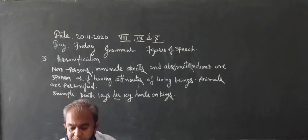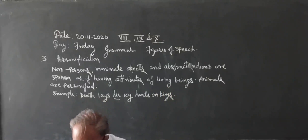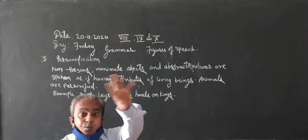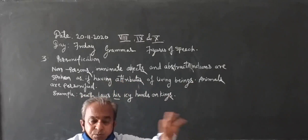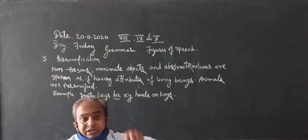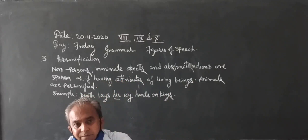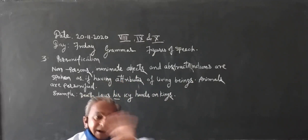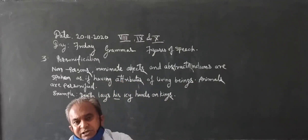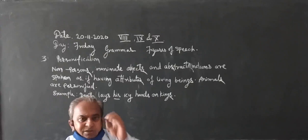Now I will give some more examples. All smooth things are considered as female, and rough things and hard things are considered as male.